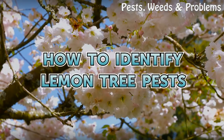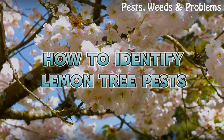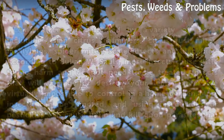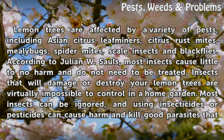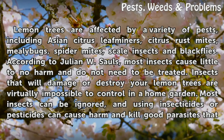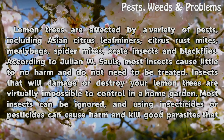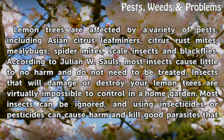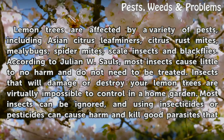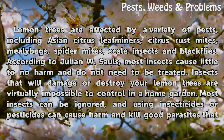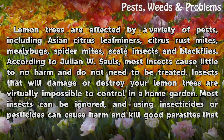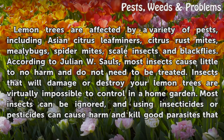How to identify lemon tree pests. Lemon trees are affected by a variety of pests including Asian citrus leaf miners, citrus rust mites, mealy bugs, spider mites, scale insects, and black flies. According to Julian W. Sauls, most insects cause little to no harm and do not need to be treated.